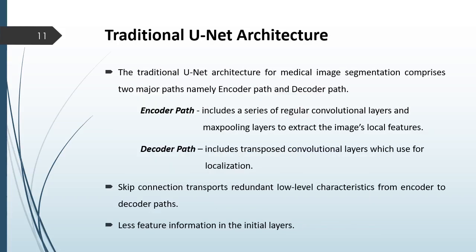Considering the traditional U-Net architecture for medical image segmentation, it comprises two major parts: the encoder path and the decoder path. The encoder path includes a series of convolutional layers and max pooling layers to extract local features from the image. The decoder path includes transposed convolutional layers used for localization. Skip connections transport low-level features from the encoder to the decoder path. However, the traditional U-Net architecture has less feature information in the initial layers.